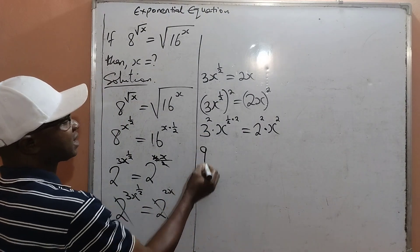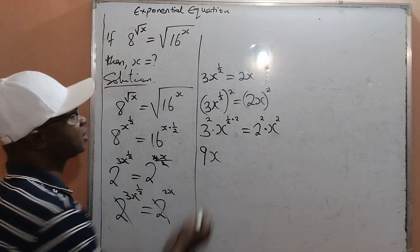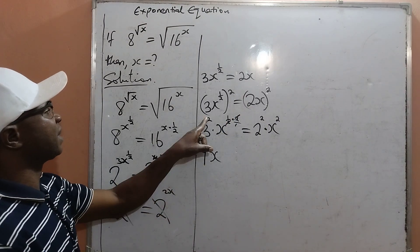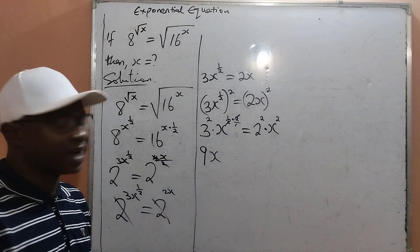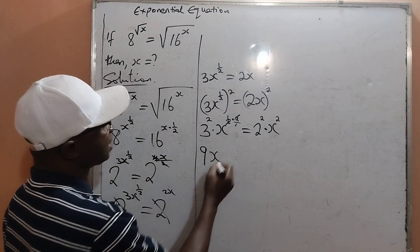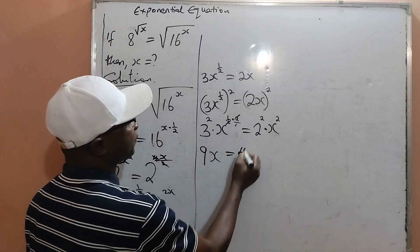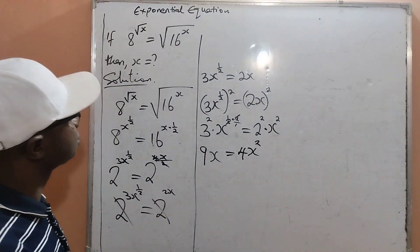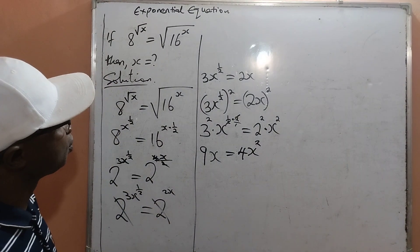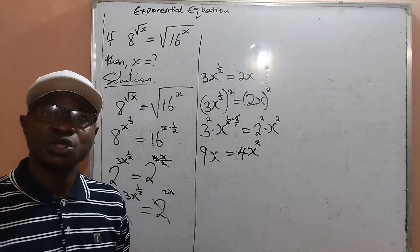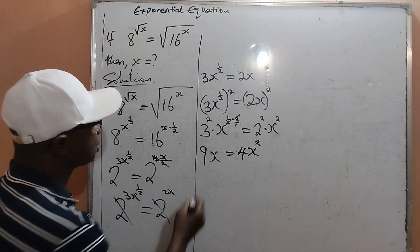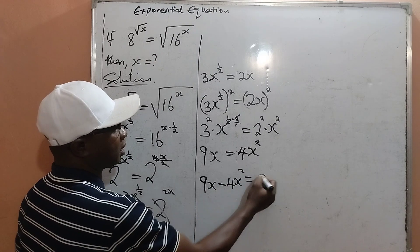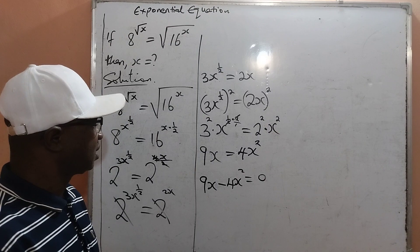From here, I can get 9 then x — 9x — because 3 squared is 9, leaving me with 9 multiplied by x. And on the right hand side, I will have 2 raised to the power 2, which is 4, multiplied by x raised to the power 2. Next, I move what I have from the right hand side to the left hand side, to have it written as 9x minus 4x squared equal to 0.